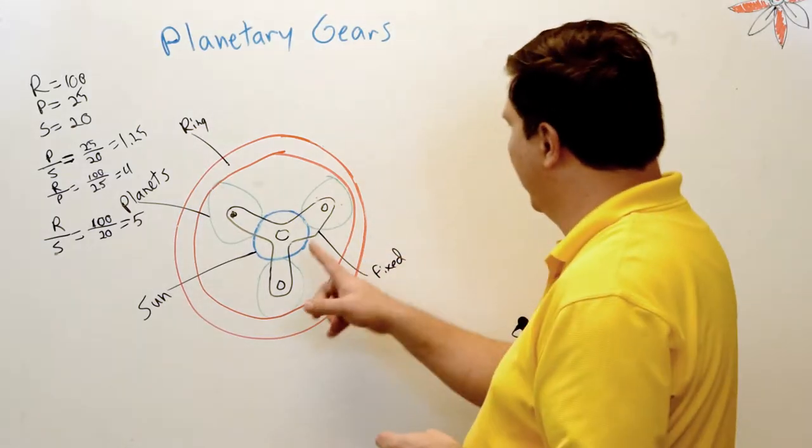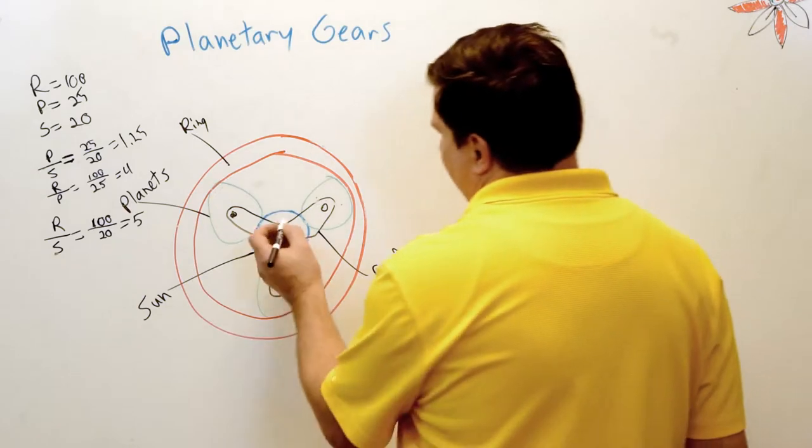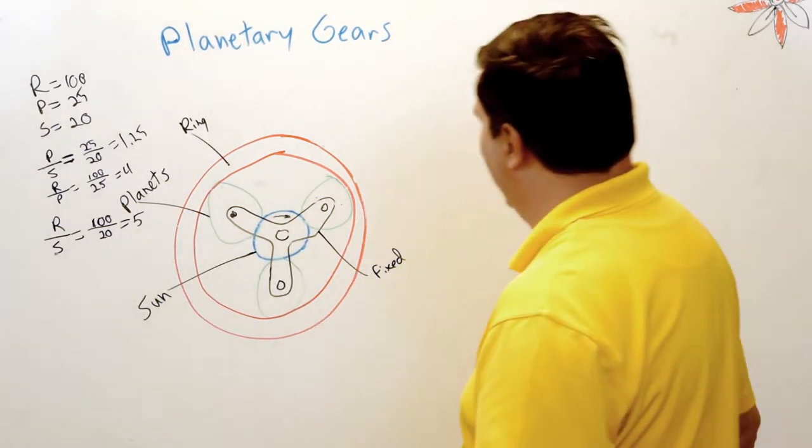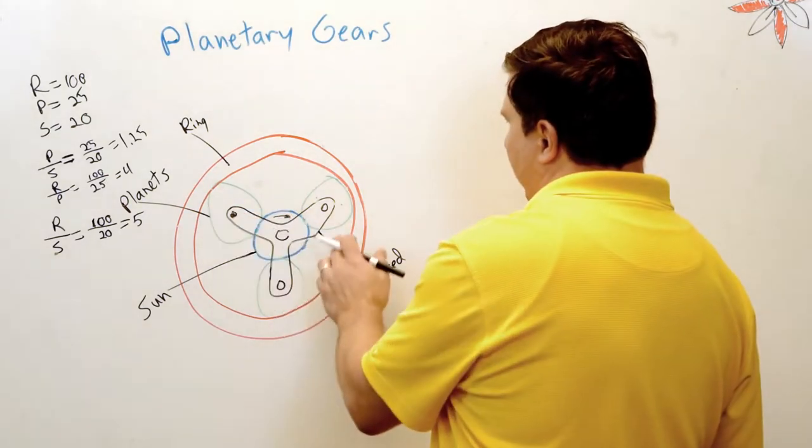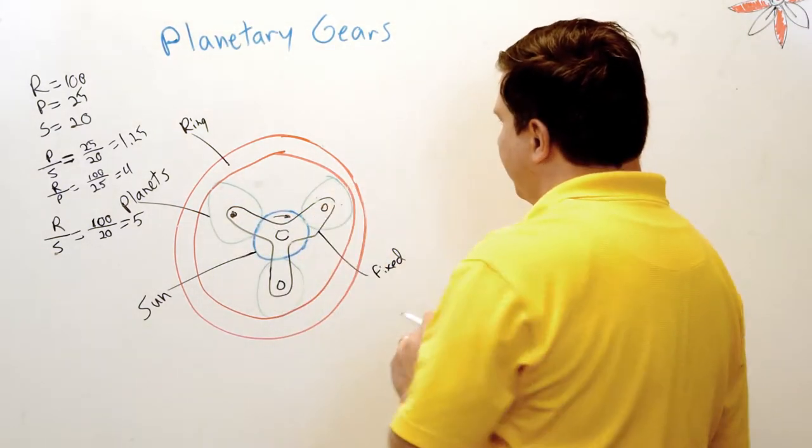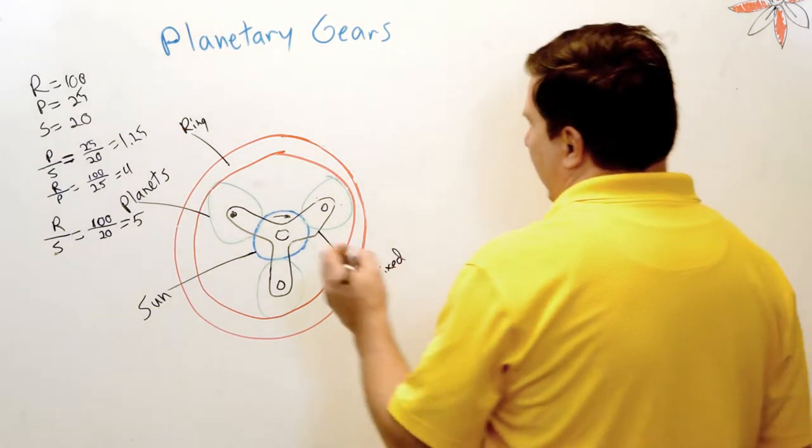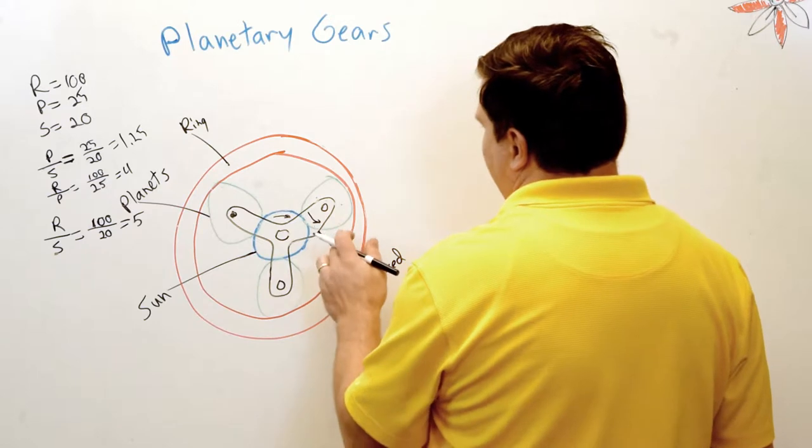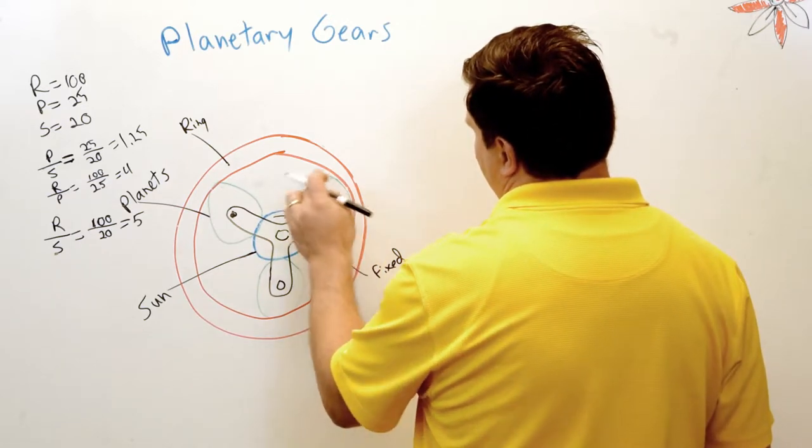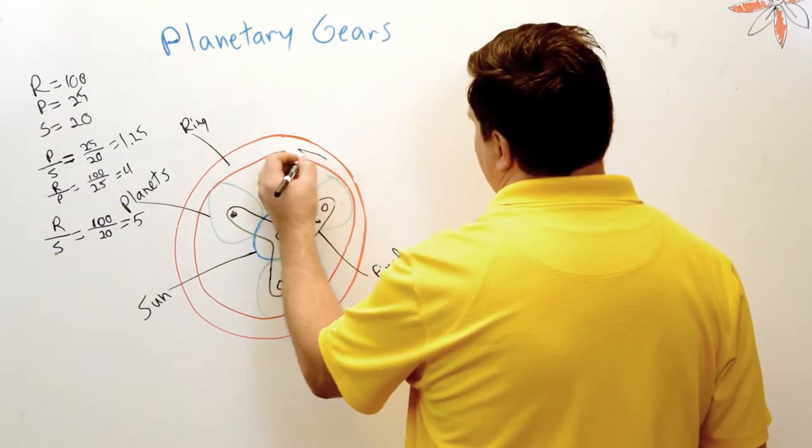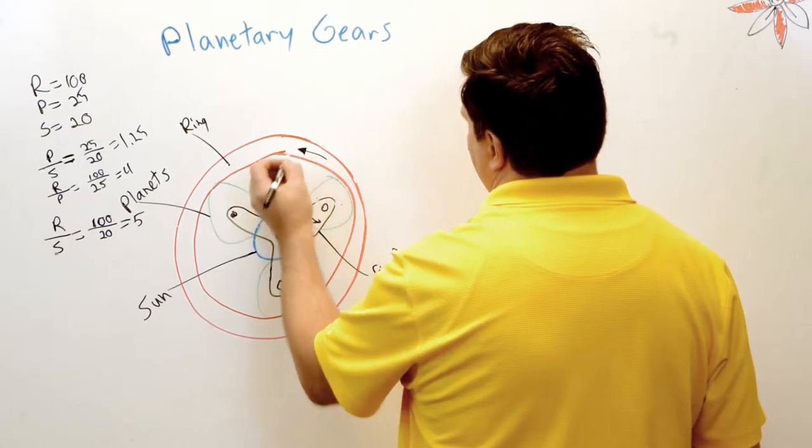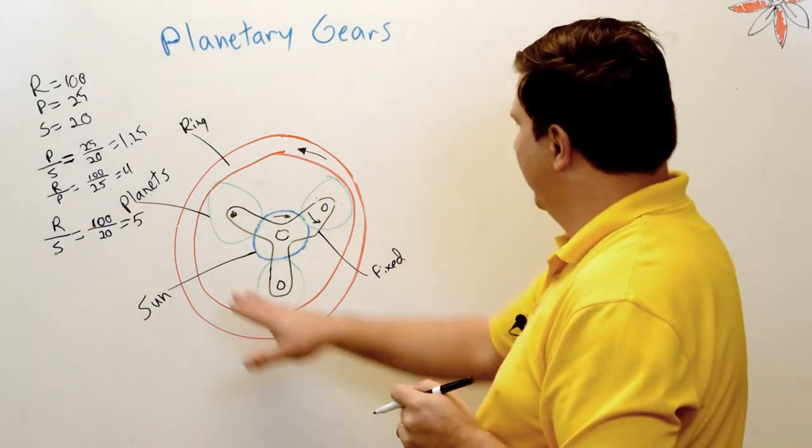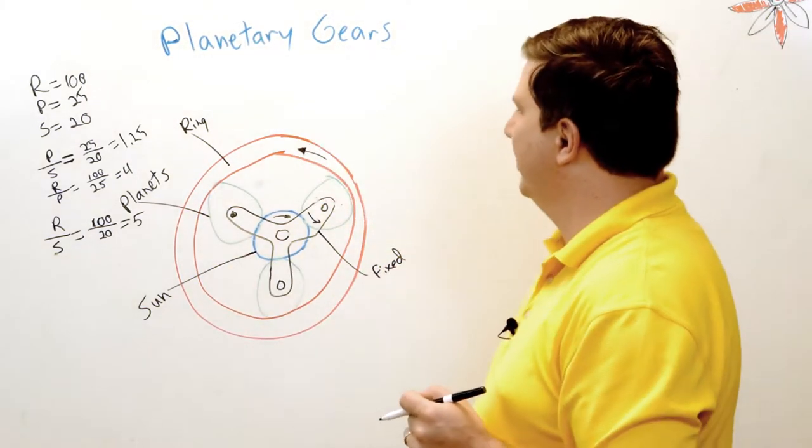That's the stator. So what's gonna happen is I'm gonna drive my sun. I'm gonna drive that clockwise. This thing doesn't move relative to that, so these gears will stay in the same position. So they're gonna go the opposite direction. As it gets up here, they're gonna pick this one up and it's gonna go that direction. So let's just say my sun is my input and my ring is my output.